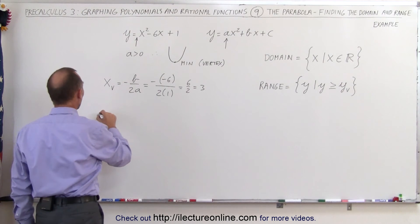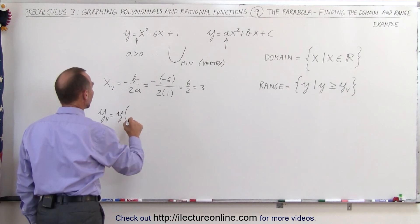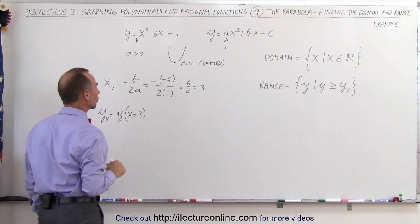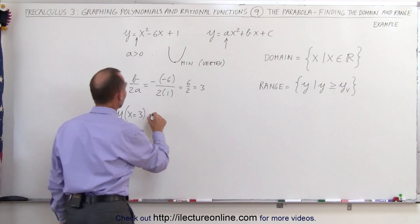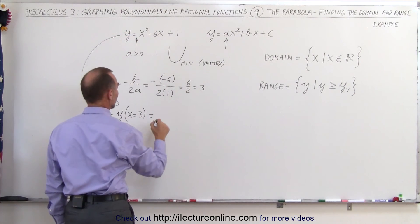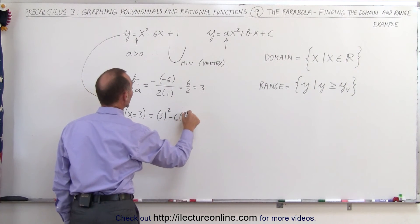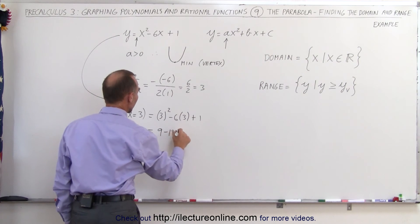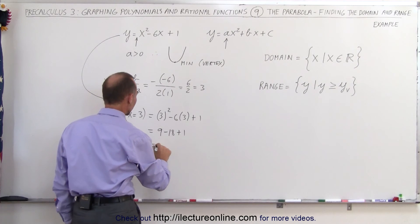To find the y-coordinate of the vertex, y_v = y(3). Taking the equation and substituting x = 3: 3² - 6(3) + 1 = 9 - 18 + 1 = -8.